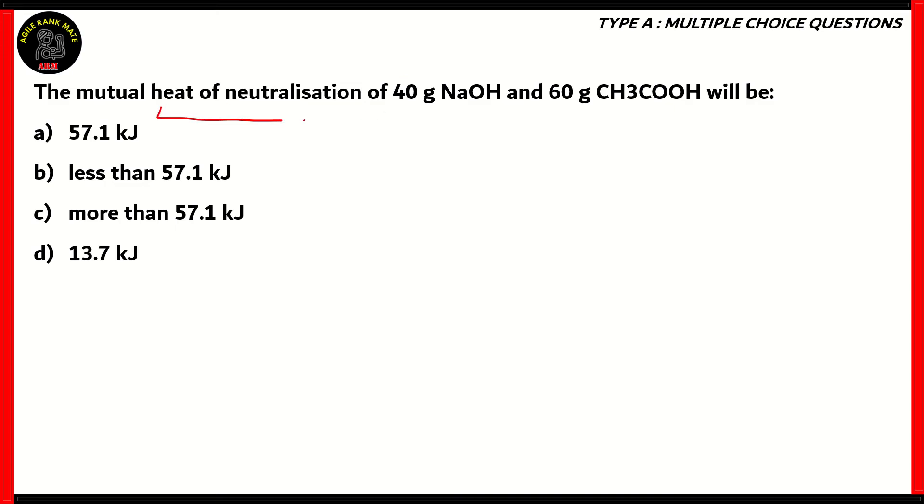We need to find out the heat of neutralization. What we have are NaOH, or sodium hydroxide, and CH3COOH, which is acetic acid, more commonly known as vinegar. We have 40 grams of NaOH and 60 grams of acetic acid. What happens when we undertake a reaction from them? NaOH plus CH3COOH would give us CH3COONa, that is sodium acetate, plus water.